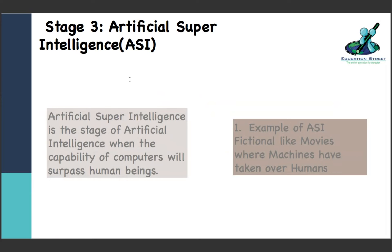The third part is ASI - Artificial Super Intelligence - which is the stage of AI when the capabilities of computers will surpass human beings. I think that's something which we don't want. We have already seen such examples - do you remember fictional movies like Star Trek, Transformers? We have seen machines taking charge of humans and Earth. Those are straight out of ASI scenarios.